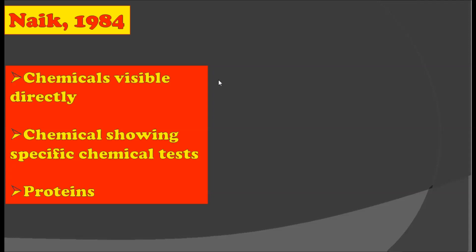There are already previous attempts to classify the plant kingdom depending on chemicals. We are going to see two points of view. The first was given by Nike in 1984, in which he said the plant kingdom can be divided by using chemicals into three groups: first, chemicals visible directly; second, chemicals showing specific chemical taste; and third, proteins. According to Nike, we can classify plants by using these three categories of chemicals.